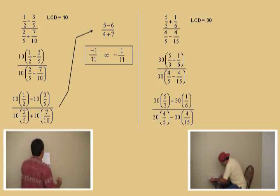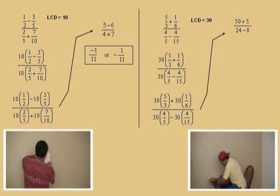Go ahead. Do 30 times five-thirds. 3 goes into 30 ten times. 10 times 5 is 50. Very nice, Charlie. Now, next one: 30 times one-sixth. 6 goes into 30 five times. 5 times 1 is 5. Very good. Now, we'll come to the bottom. Do 30 times four-fifths.